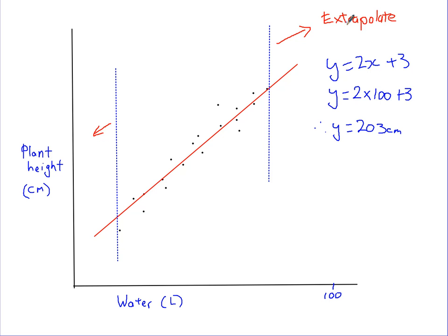Obviously, if you keep going up this way, the plant gets bigger and bigger, but if you put too much water on it, you might kill it. So you've got to be careful that your answer is actually reasonable. 203 centimetres isn't too bad, but if you're getting up around 10 or 12 metres for putting on 100 litres of water, that seems a bit silly. So that's extrapolating, going outside of these poles.